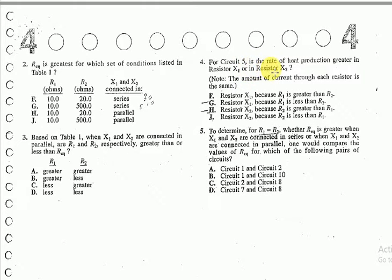Before we start, they've asked for circuit 5: is the rate of heat production greater in resistor X1 or in resistor X2? They've also mentioned the amount of current through each resistor is the same.